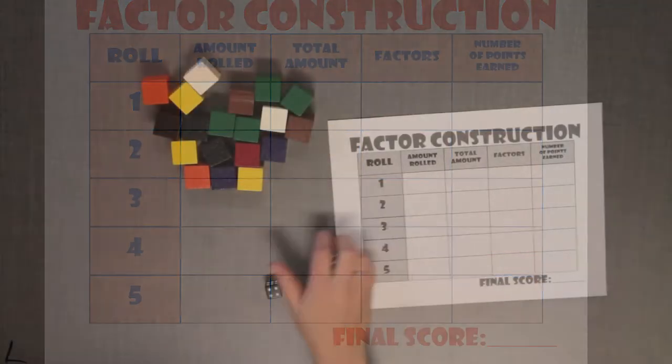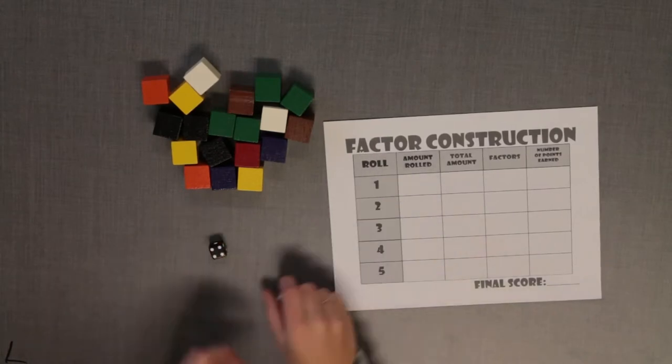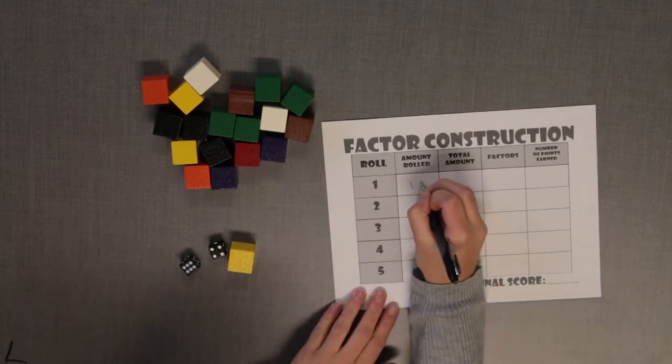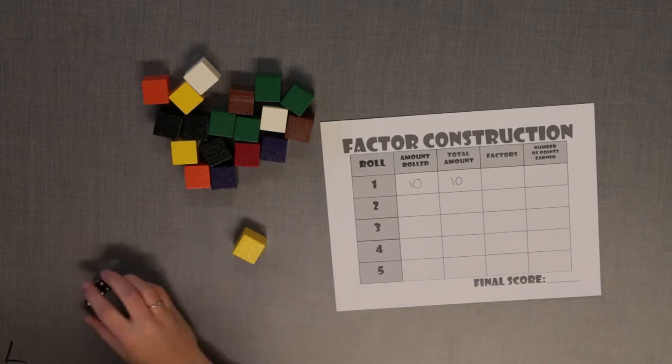You can play with two to four players. The player with the lightest color eyes goes first. Roll the dice, find the sum, then write the sum on the recording sheet. Because this is your first turn, also write the sum in the total amount column.